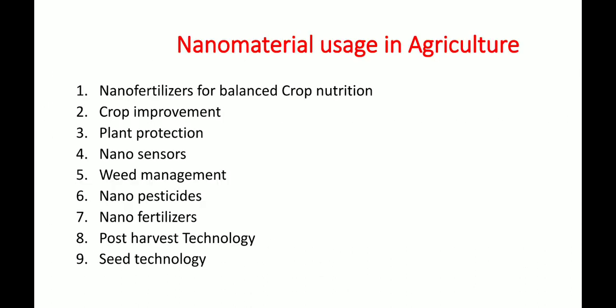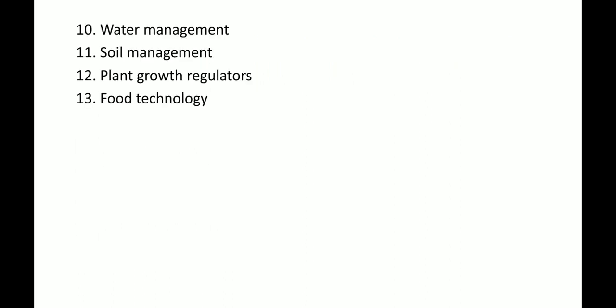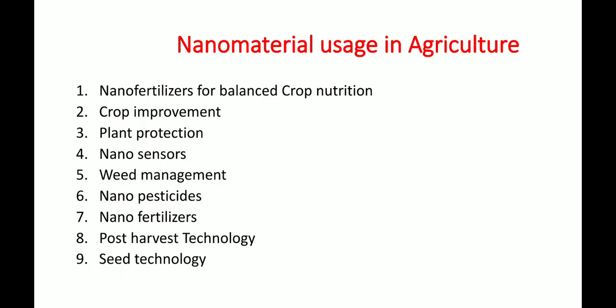There are different usages of nanomaterials in agriculture, including nanofertilizers for plant nutrition, crop improvement, plant protection, nanosensors, weed management, nanopesticides, nanofertilizers, post-harvest technology, seed science, water management, soil management, plant growth regulators, and food technology. In crop improvement, nanomaterials help improve gene sequencing and the potential yield of crops, as well as growth and development. In plant protection, fungicides, herbicides, and pesticides are encapsulated or coated to improve their efficacy, durability, and stability.